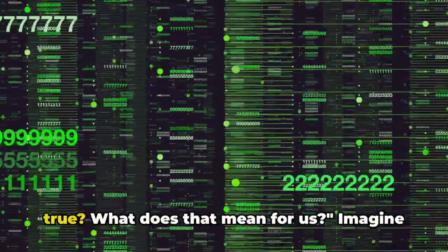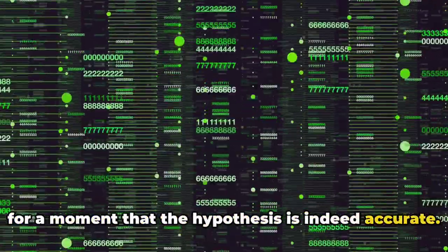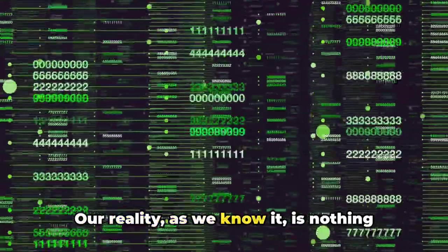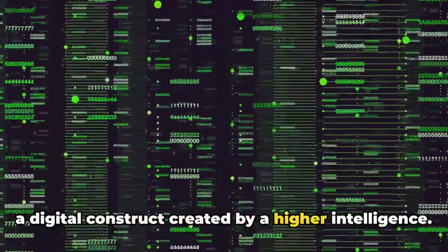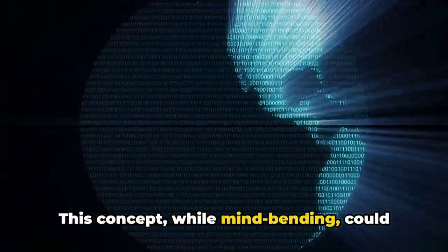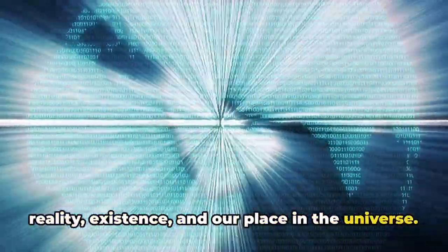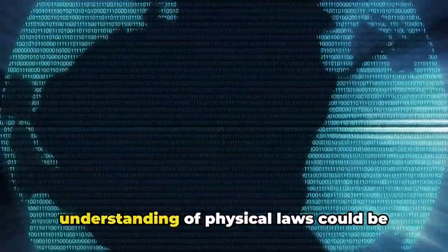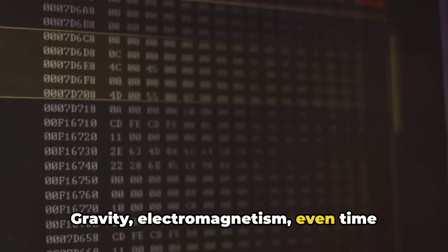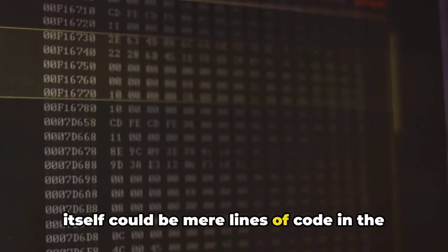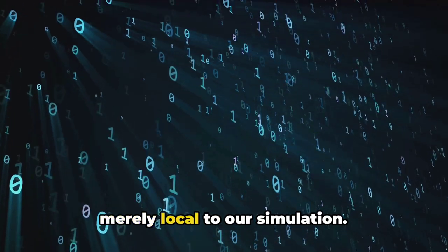What if the simulation hypothesis is true? What does that mean for us? Imagine for a moment that the hypothesis is indeed accurate. Our reality, as we know it, is nothing more than an advanced computer simulation, a digital construct created by a higher intelligence. This concept, while mind-bending, could fundamentally alter our perception of reality, existence, and our place in the universe. Firstly, it would mean that our understanding of physical laws could be incomplete or outright false. Gravity, electromagnetism, even time itself, could be mere lines of code in the grand cosmic program. The laws we consider universal might be merely local to our simulation.